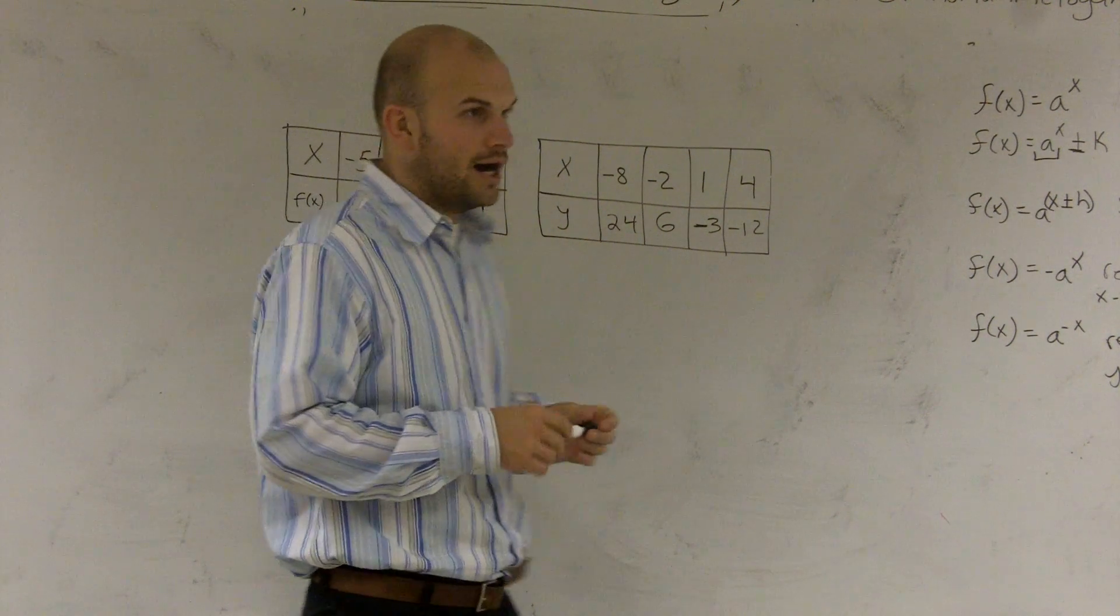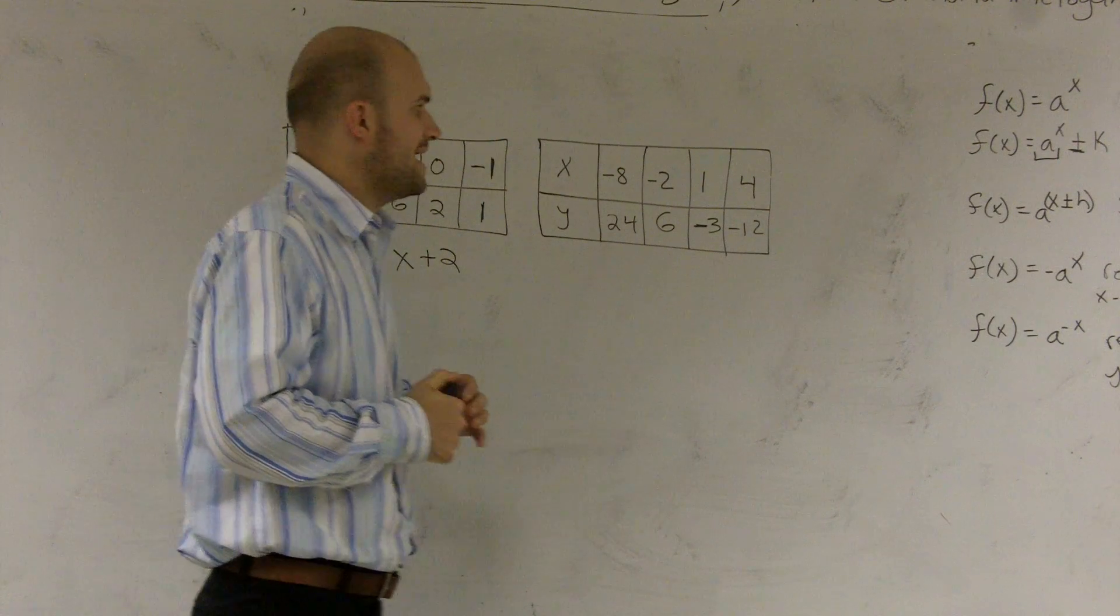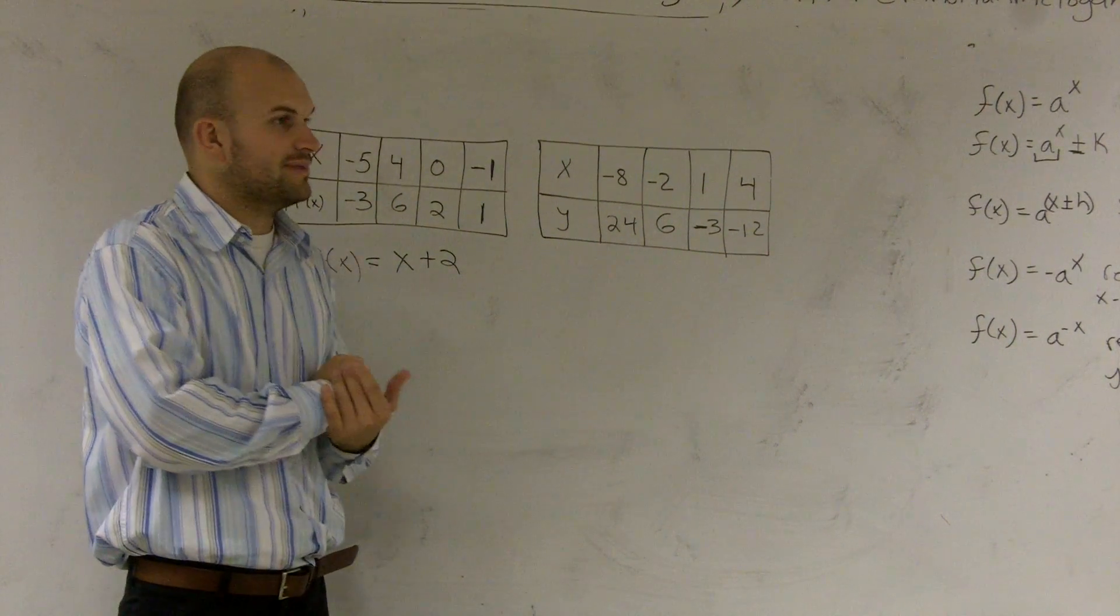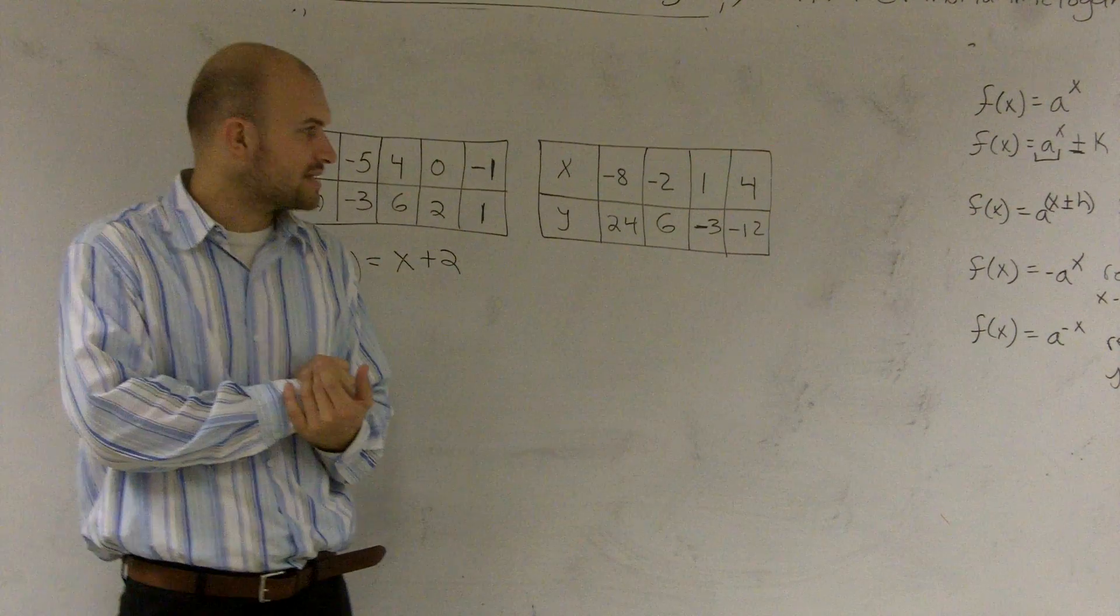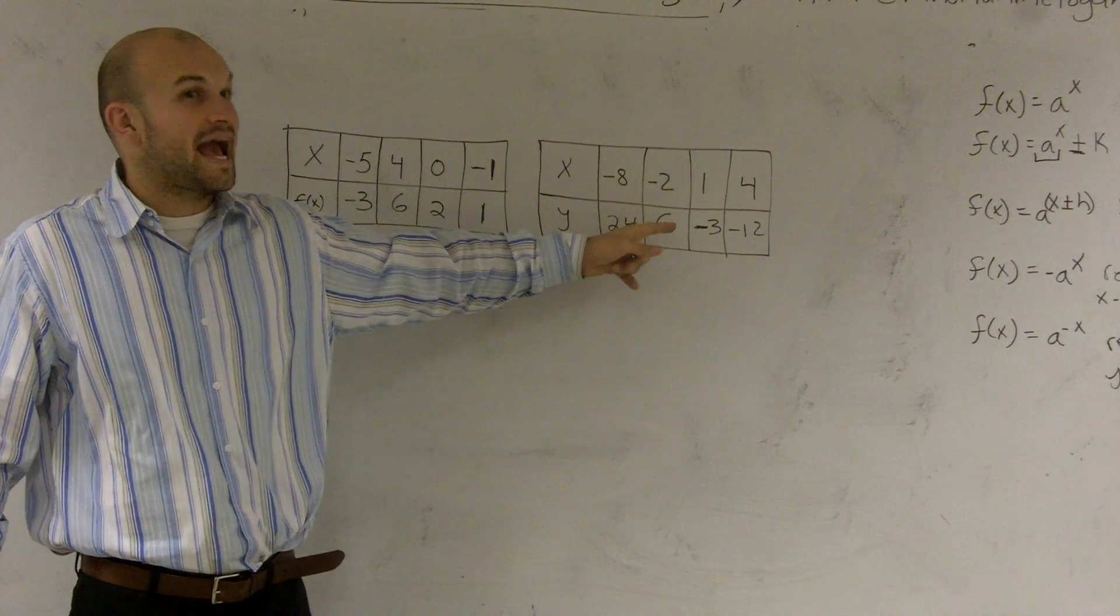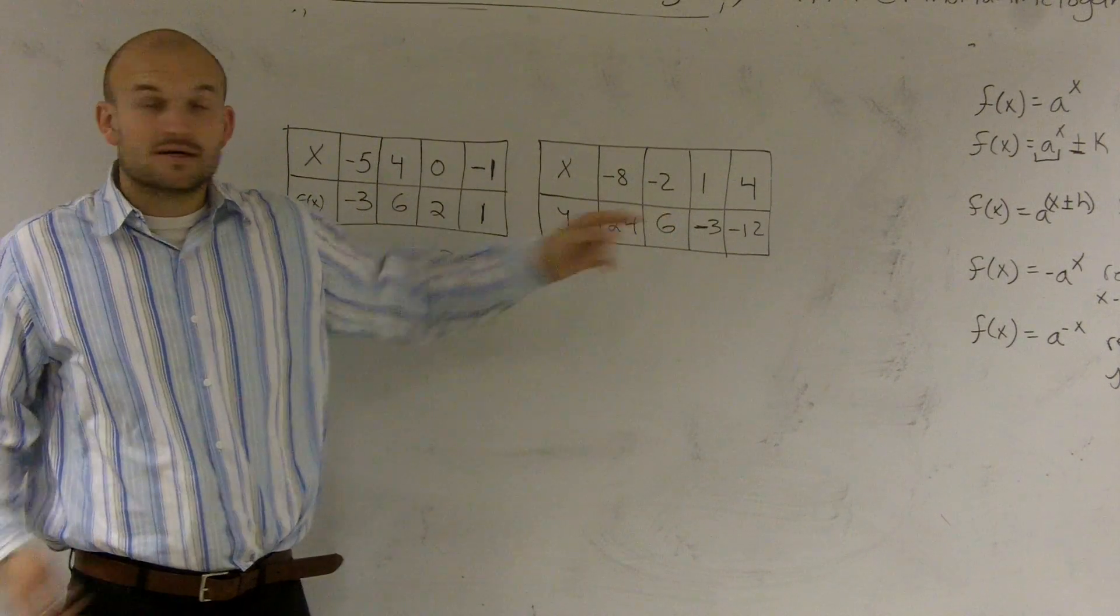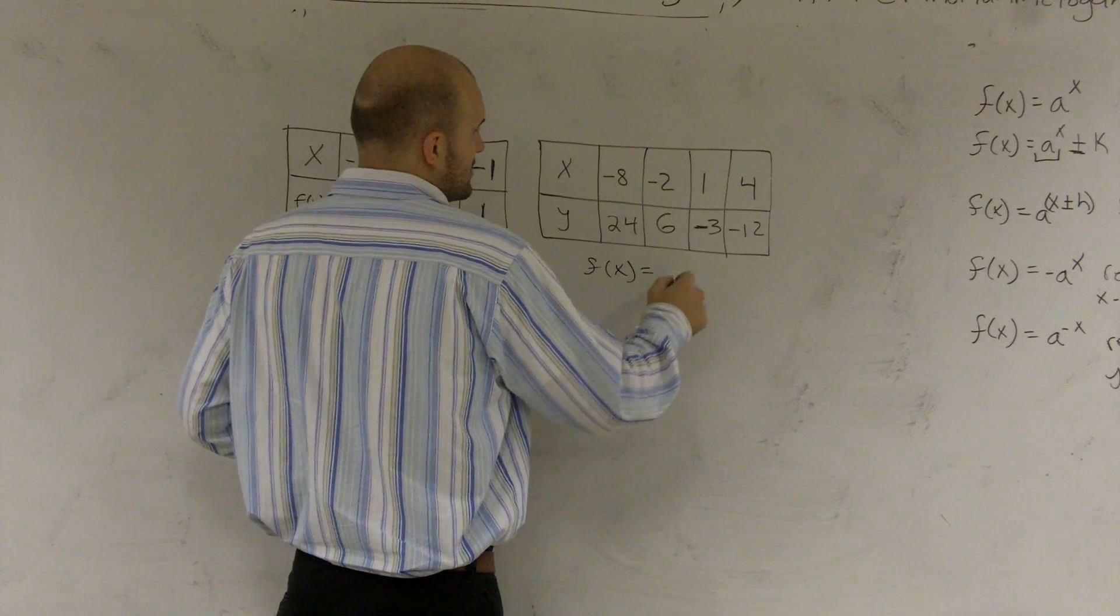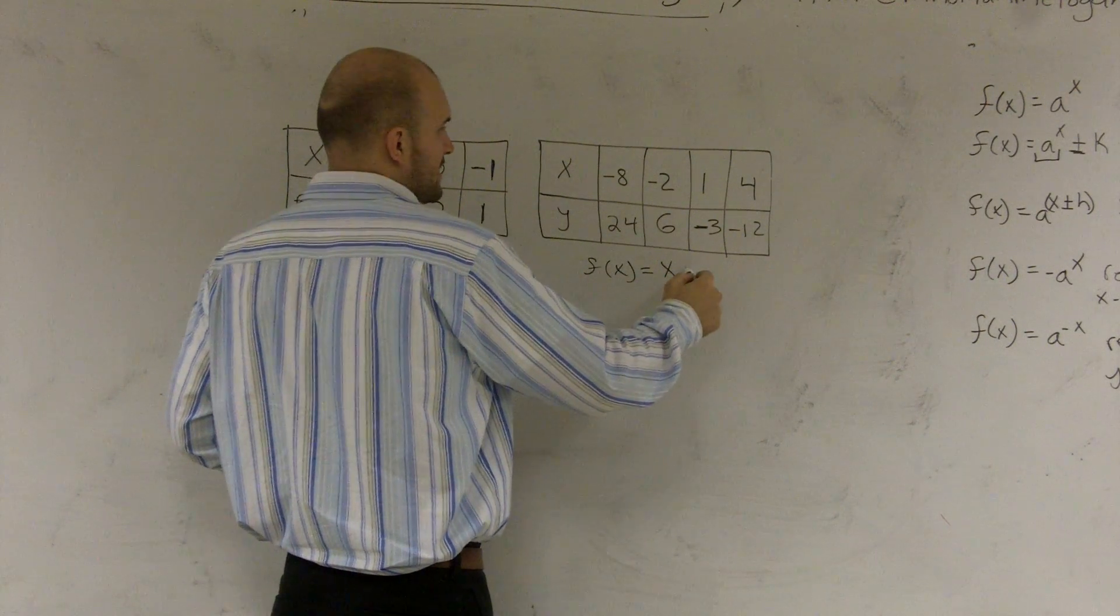Next one. Over here, again, I'm going to look for addition and subtraction. Now, here it looks like I'm going to be doing some different things. To get from negative two to six, I'm going to have to add eight, right? So I'd write f of x equals my number x for this one and then plus eight.